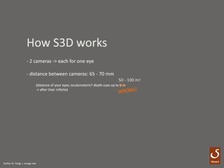Everything beyond 6 meters has infinite depth for your eyes — they can't tell the depth relation between a house and a tree more than 6 meters away. But you can still estimate how far apart they are because you've learned to handle that information. Your brain calculates shadow, perspective, and relative size to give you depth information. So after 6 meters it's your brain working, not your eyes. You can also estimate depth by moving your head from left to right because of the motion parallax.